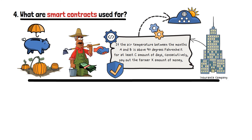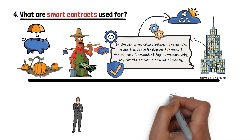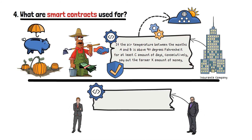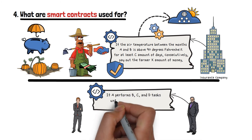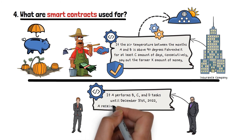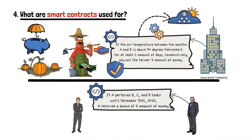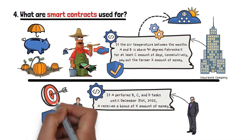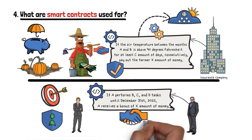Here's another example. Imagine that you want to receive a yearly bonus in your job and are trying to negotiate it with your boss. Your boss lays down the requirements you need to meet in order to receive that bonus and gives you a deadline. He also creates a smart contract that states: if A performs B, C, and D tasks until December 31st, 2022, A receives a bonus of X amount of money. In a situation like this, you know that you will definitely receive the bonus if you meet the requirements by the end of the year. After all, once the smart contract is created, there's no turning back — and your crazy boss will never change his opinion just because of bad weather.